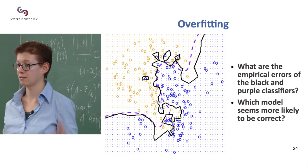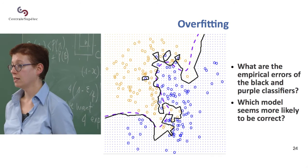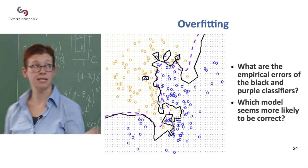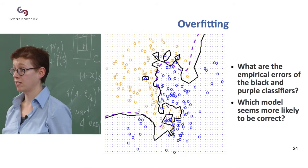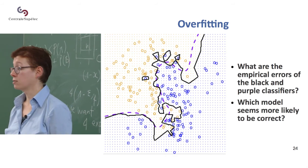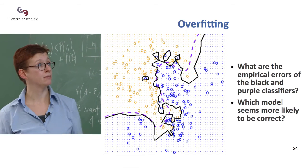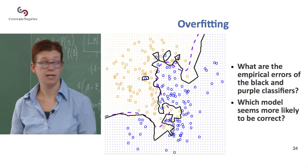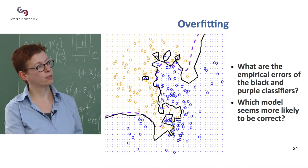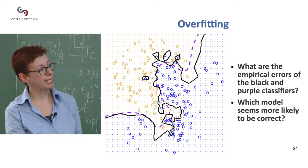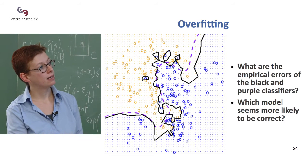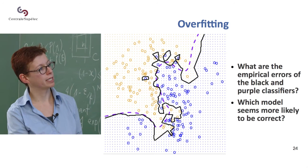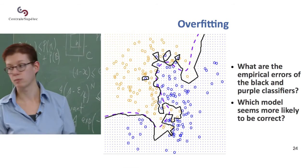So overfitting is what occurs when your model is very good on your training data. So here, the black model is perfect with your training data, but it generalizes poorly to new data, because actually, the purple explanation was better, and for a new data point, I mean, those two are kind of close to each other, but if I put a new data point here, it's actually going to be better classified by the purple one, sorry, here, by the purple one than by the black one.